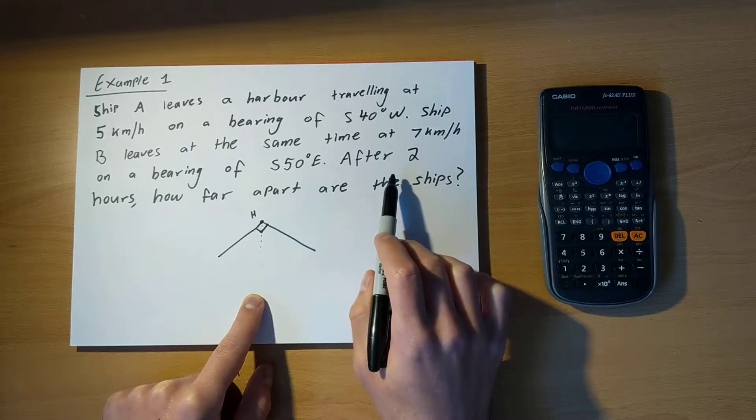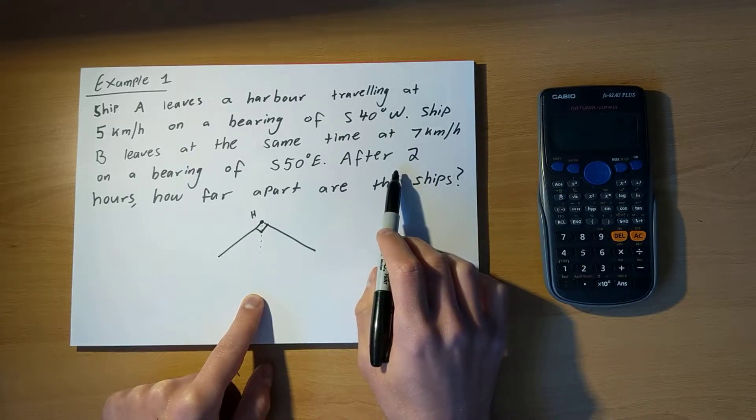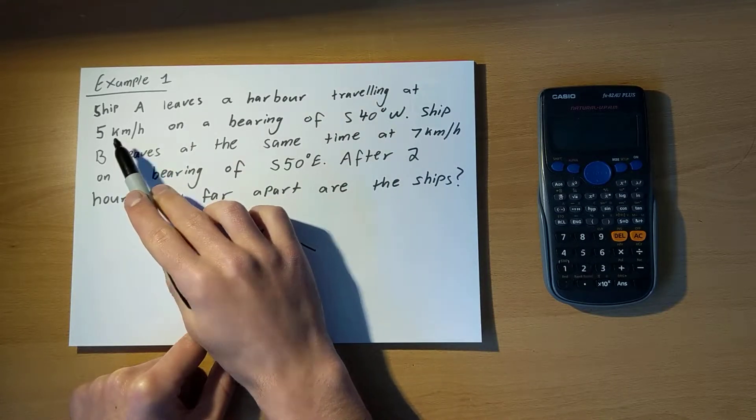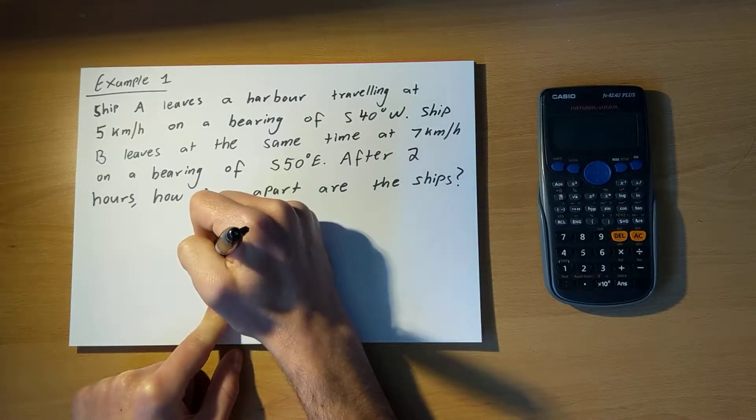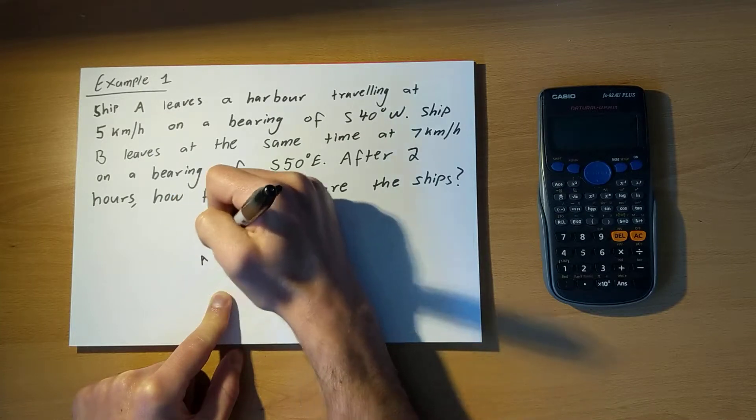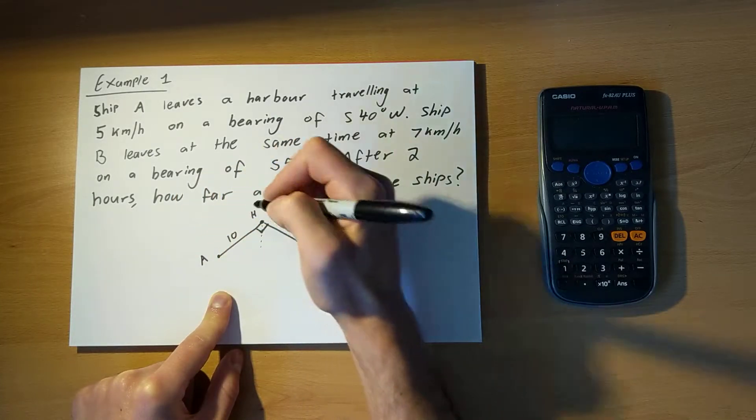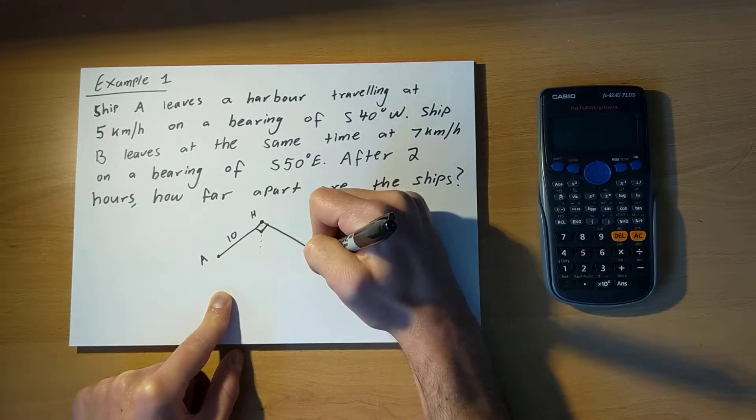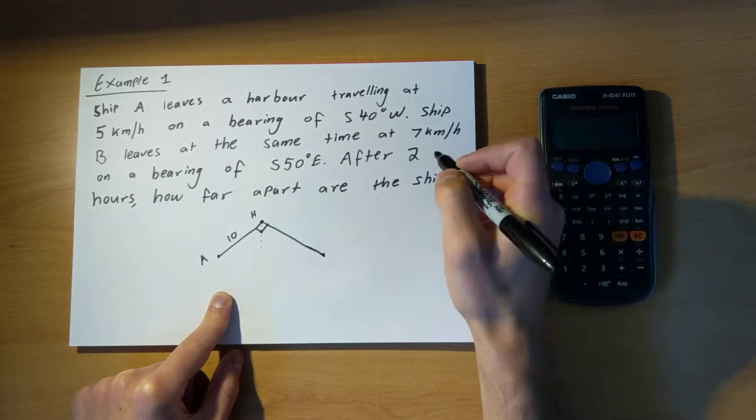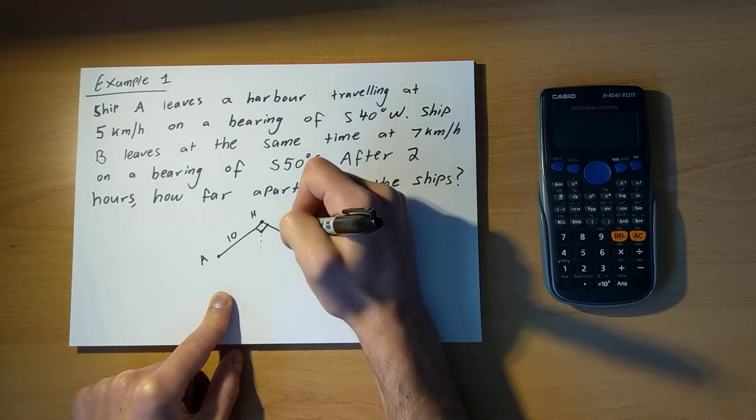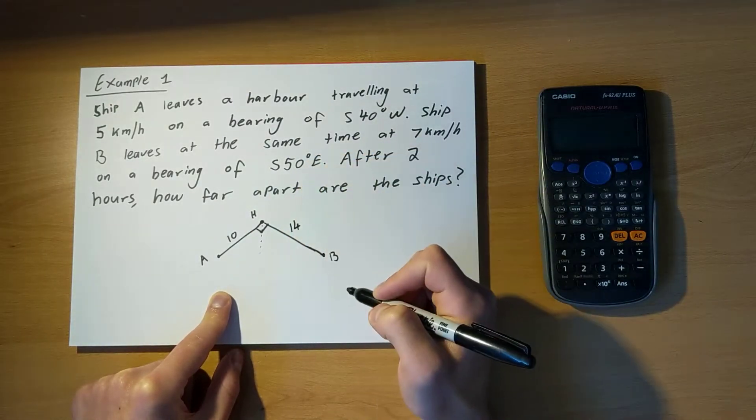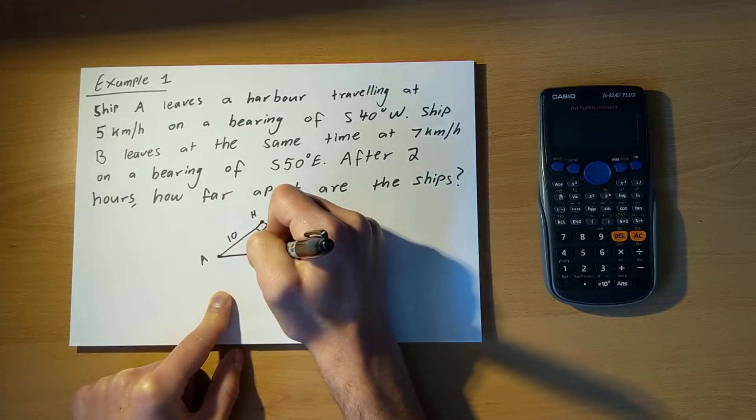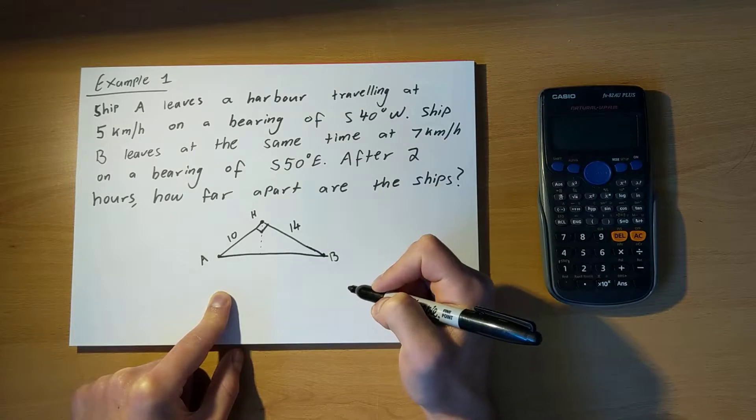Now, after two hours, how far has each ship travelled? Well, ship A is travelling at 5km every hour. So after two hours, ship A is 10km away from harbour. Ship B is travelling at 7km an hour. So after two hours, ship B is 14km away from harbour. And I'm now interested in the distance between A and B, so this distance here.